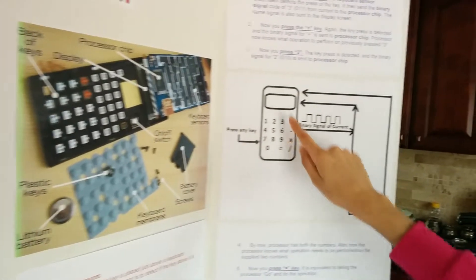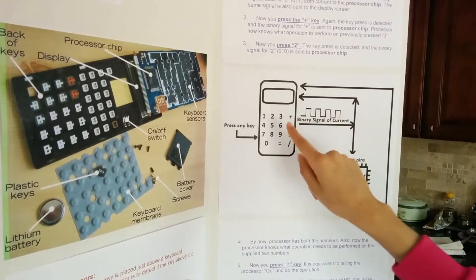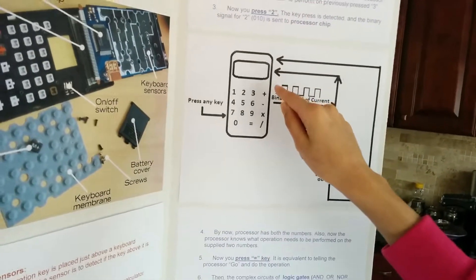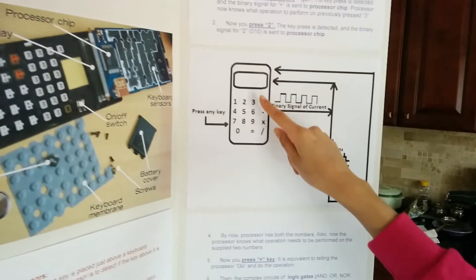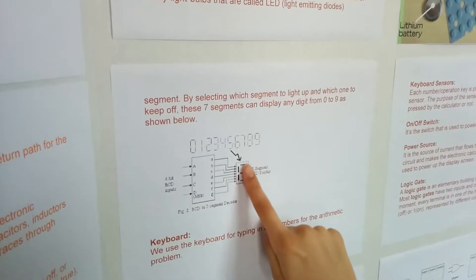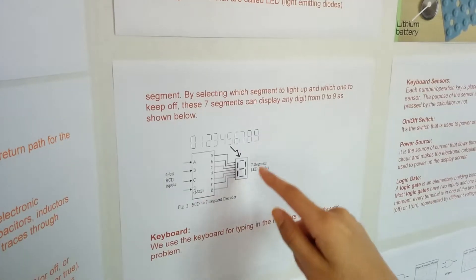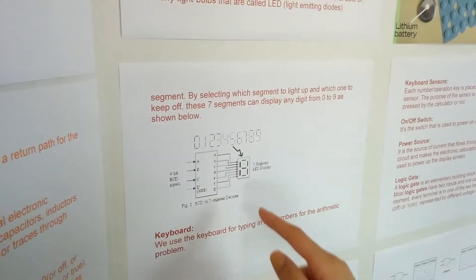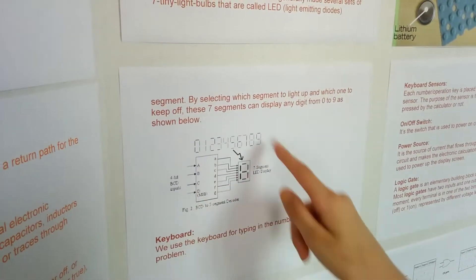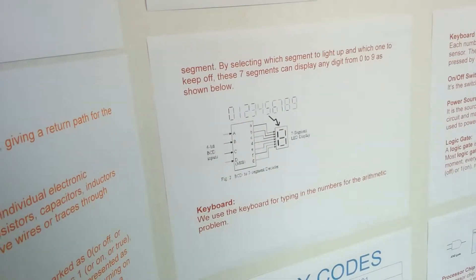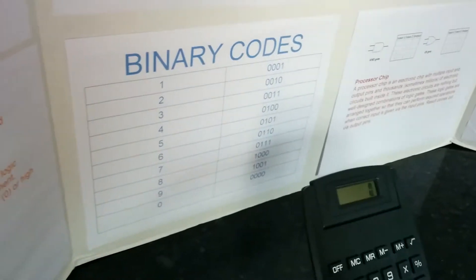So over here, it gets converted into a number using seven segments. Here are the seven segments. It could show any number by lighting up a few of the segments. Each of the segments are made up of tiny light bulbs, so there are seven tiny light bulbs.